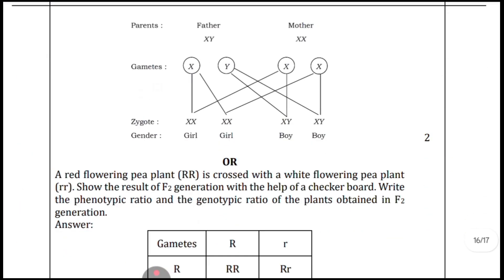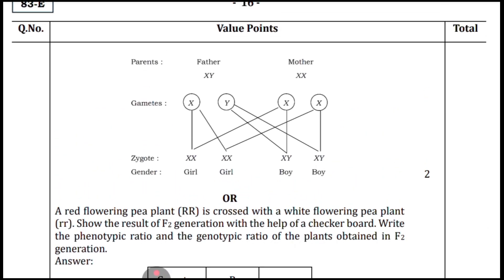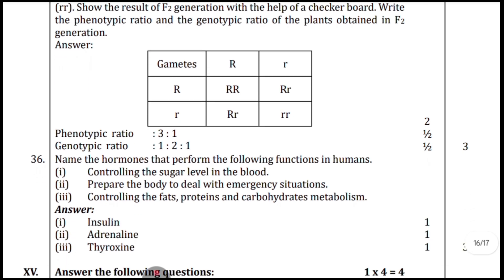The diagram here is compulsory and important — it is worth two marks. Part B: a red-flowering pea plant (RR) is crossed with a white-flowering pea plant (rr). Show the result of the F2 generation with the help of a Punnett square. The Punnett square is worth two marks; writing the phenotype ratio and genotype ratio carries half a mark each — you can see the marks distribution on the right-hand side.